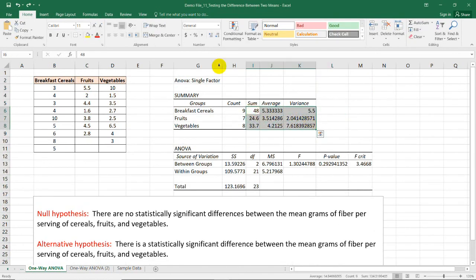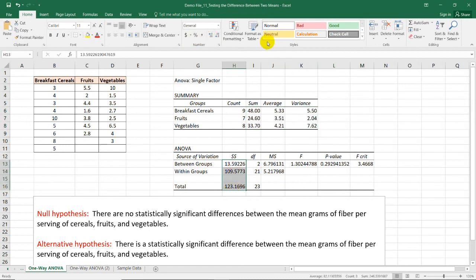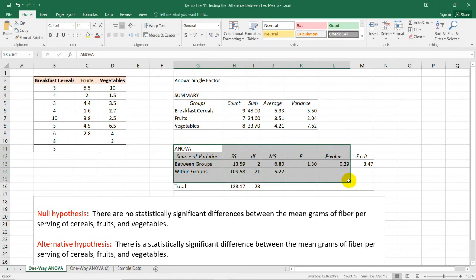Let's first round off our values to two decimal places. In the first table, we can see here the descriptives for each group. The breakfast cereals have an average of 5.33 grams and its variance is 5.5. We can see right away that the average for each of these groups are not similar. But is this statistically significant?